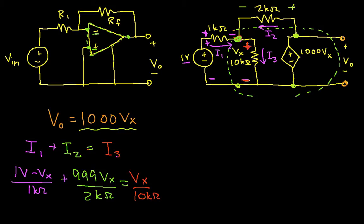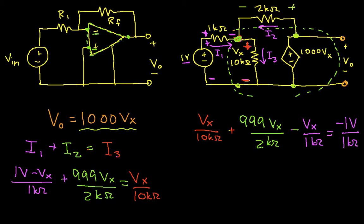We can say that Vx over 10k ohms plus 999 Vx over 2k ohms minus Vx over 1k ohm is equal to minus 1 volt over 1k ohm. So I have just simplified. I basically have gotten all the terms that include Vx on one side and all the other terms on the other side.